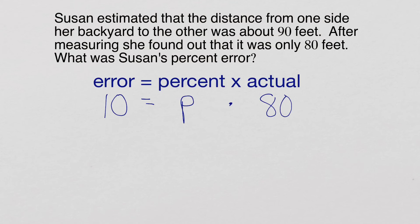Once we're all set up, go ahead and solve it. So divide both sides by 80. It's going to cancel those 80s out. Leave me the P on the right. 10 divided by 80 is 0.125.